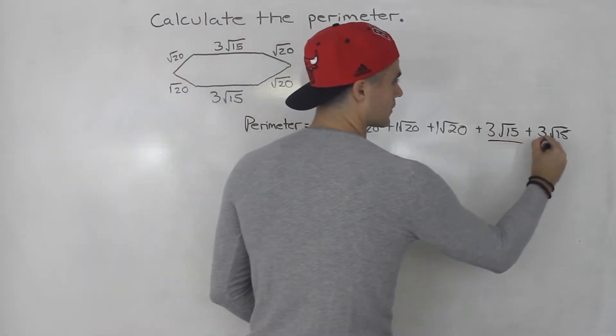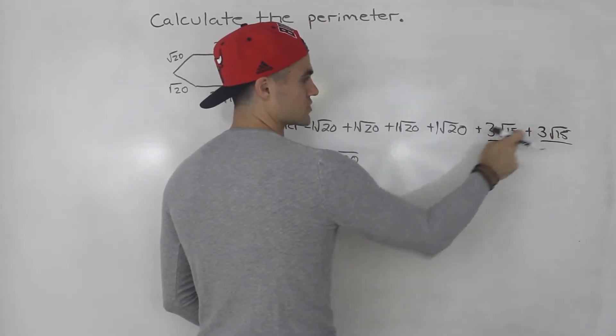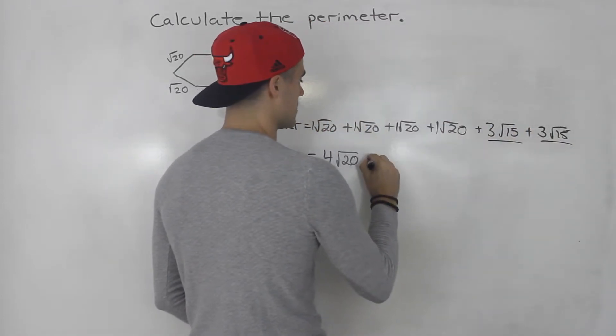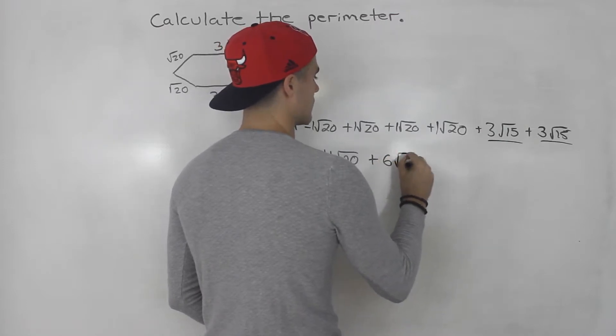And notice these two are like terms as well because the radicals are the same. So we would add the coefficients in front. So three plus three, that gives us six root 15.